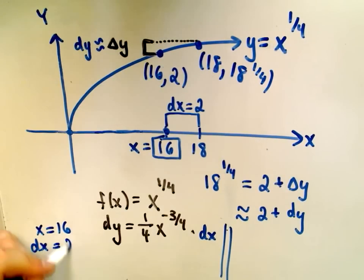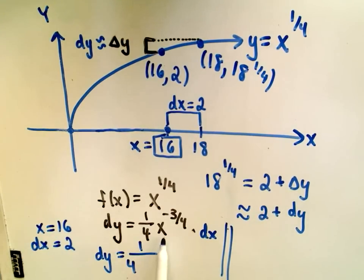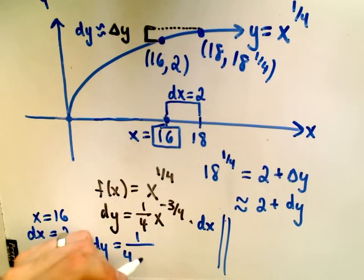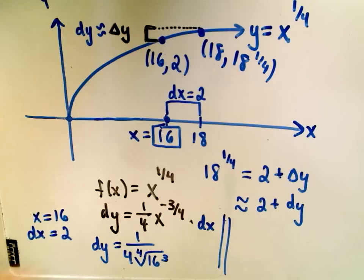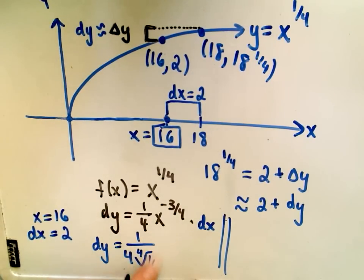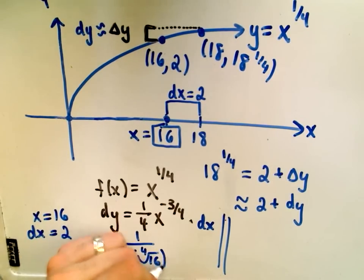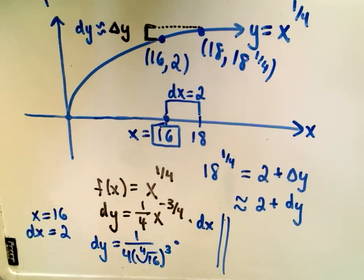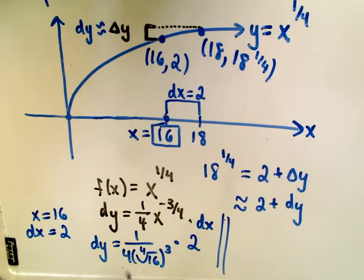If we compute our dy, we've got 1/4 times x^(-3/4). I can put that in the denominator as x^(3/4), which is the 4th root of x cubed. The x value I'm plugging in is 16. Let's make it the 4th root of 16, cubed on the outside. That'll be easier to evaluate. We multiply that by our dx, which is 2.